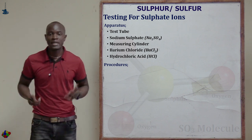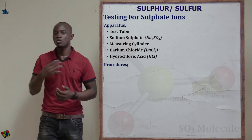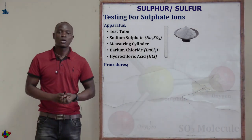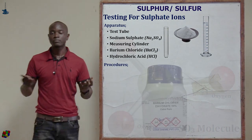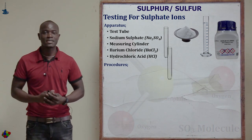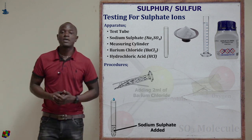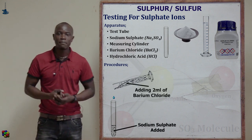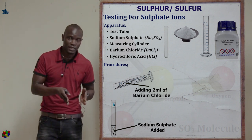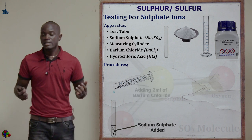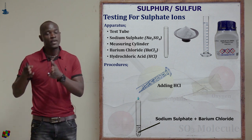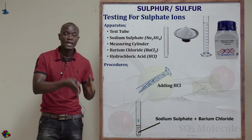After the heading, we list the apparatus: test tubes, sulfate sample, sulfite sample, measuring cylinder, and barium chloride. For the procedure, written in past tense: we added two centimeters cubed of sodium sulfate in a clean test tube, followed by two centimeters cubed of barium chloride. Then two centimeters cubed of hydrochloric acid was added, and observations were made.